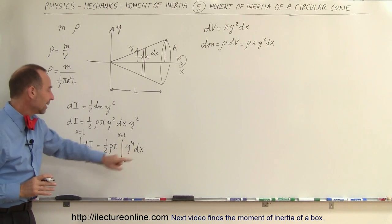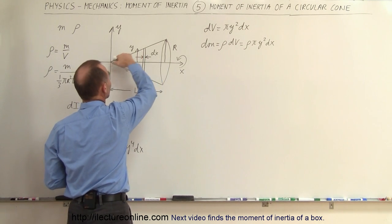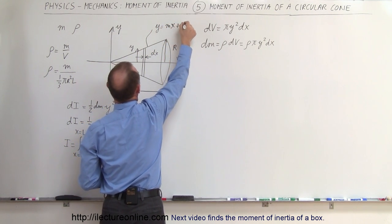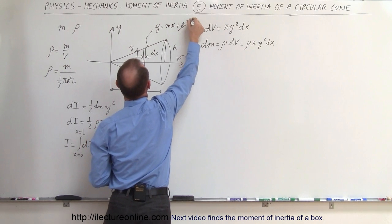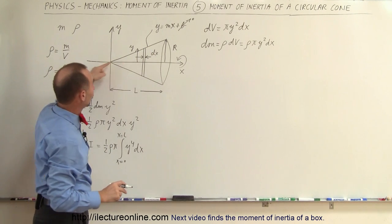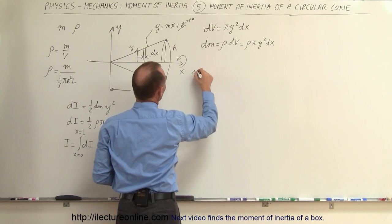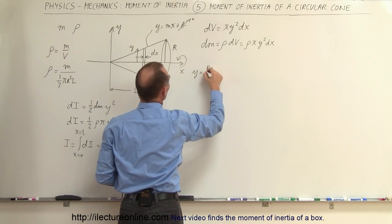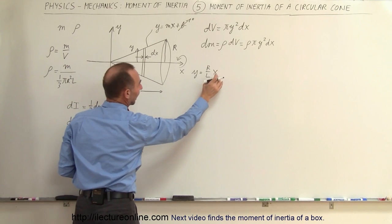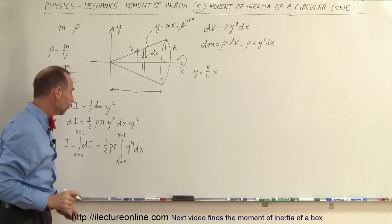We have y and dx, so we need a relationship between y and x. The edge of the cone follows a linear equation y equals mx plus b, where b equals zero because the intercept is at the origin. The slope is R over L, so y equals (R/L) times x. This means we can replace y to the fourth with R to the fourth divided by L to the fourth times x to the fourth, matching our variable of integration.